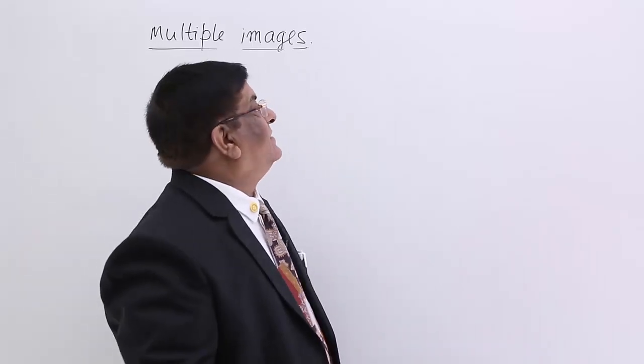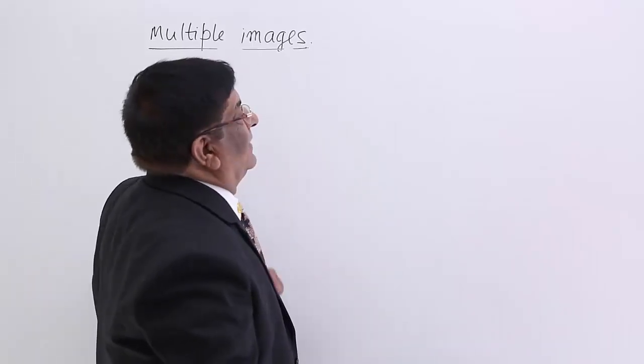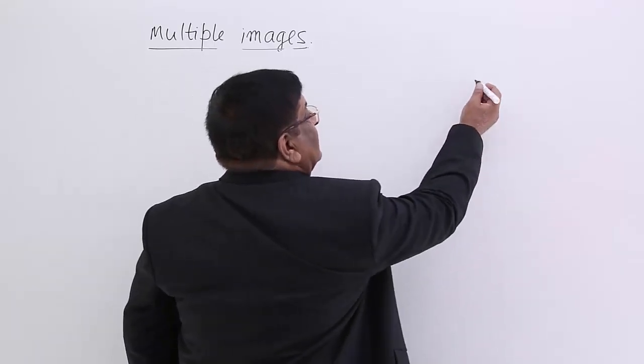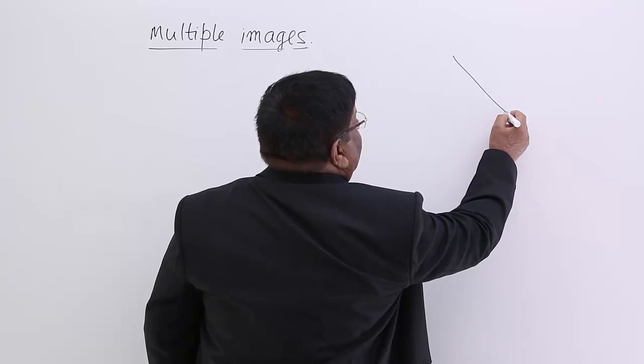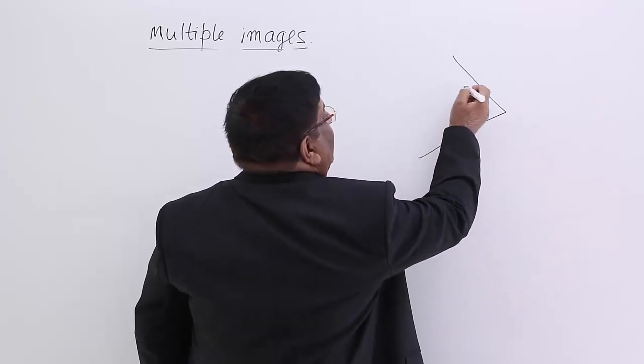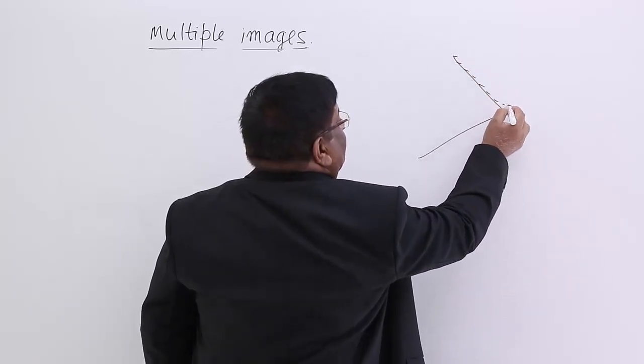Now we will see certain special cases of multiple images. If we are seeing our image in two mirrors, these are the two mirrors and these are the reflecting surfaces.